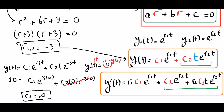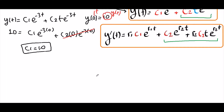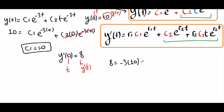Using the second initial condition, we can solve for c2. Our second initial condition is y'(0) = 8, where t = 0 and y'(t) = 8. So 8 = (-3)(10)e^(-3t) + c2·e^(-3t) + (-3c2)·t·e^(-3t), evaluated at t = 0.